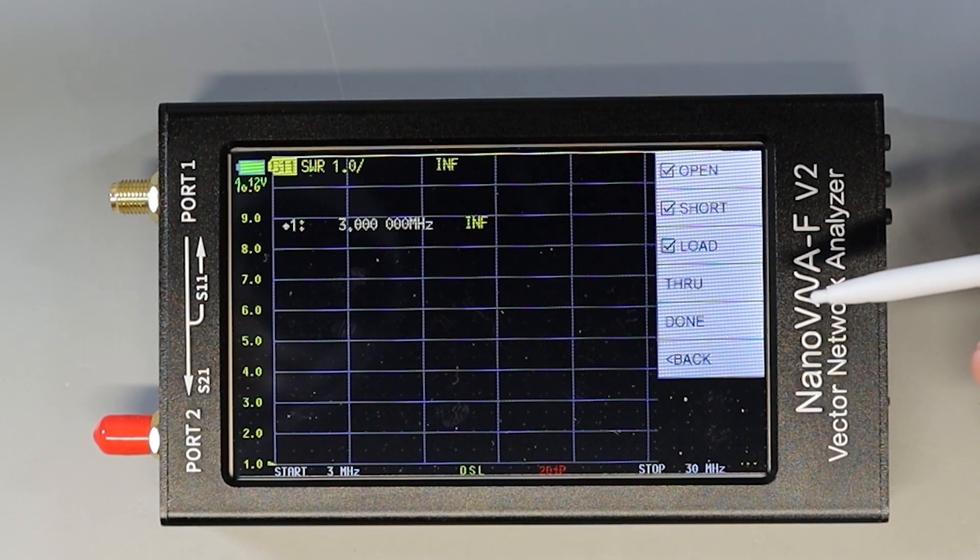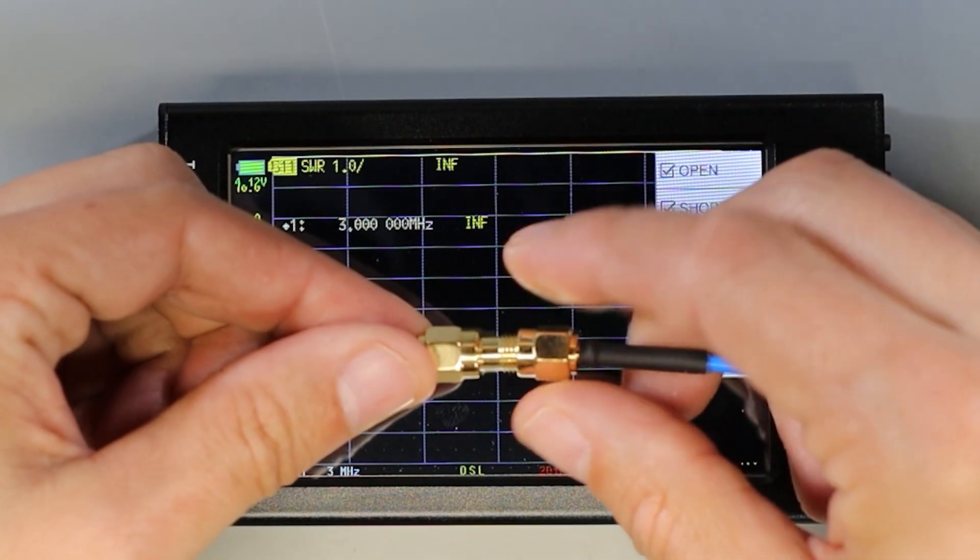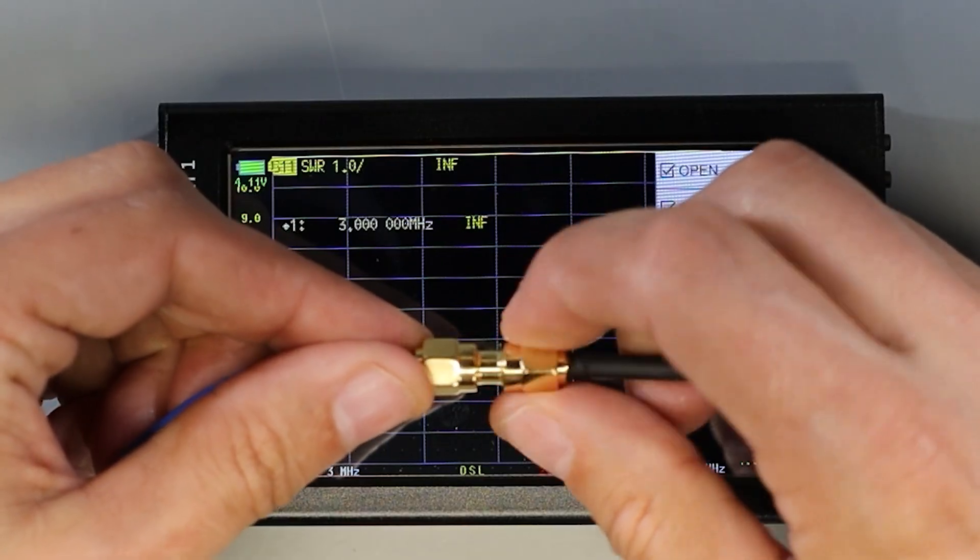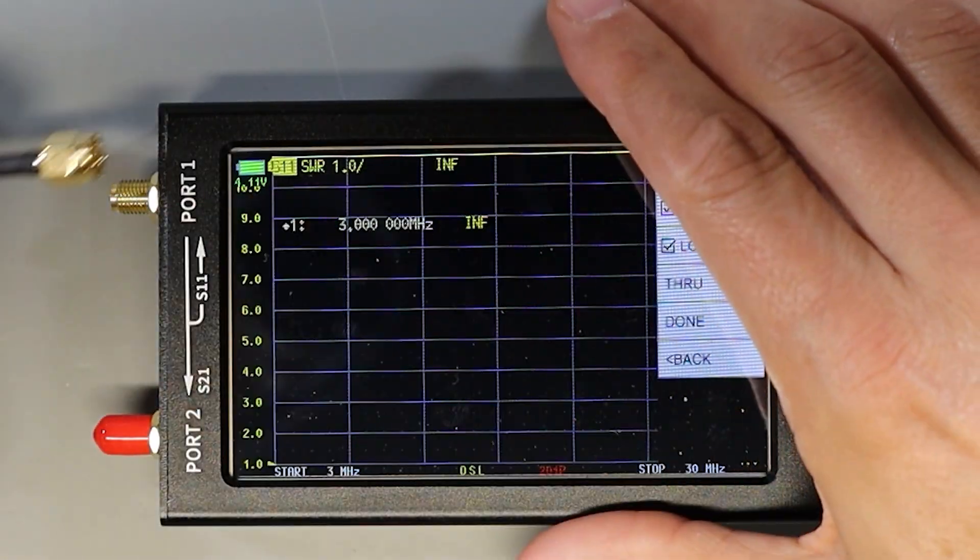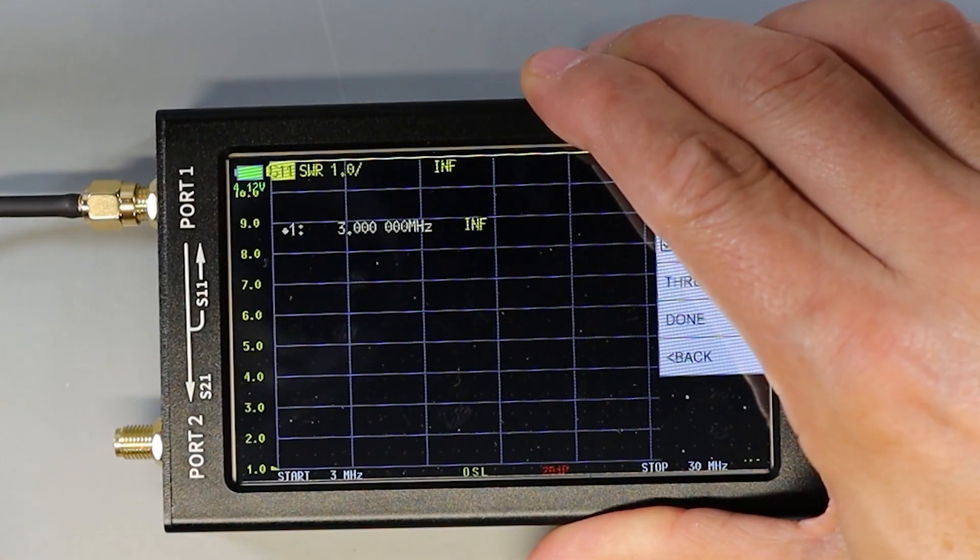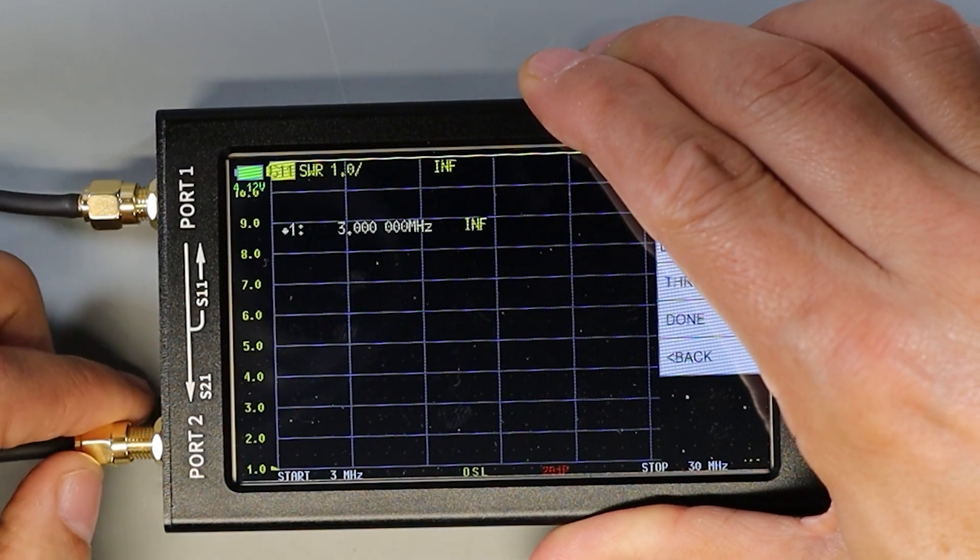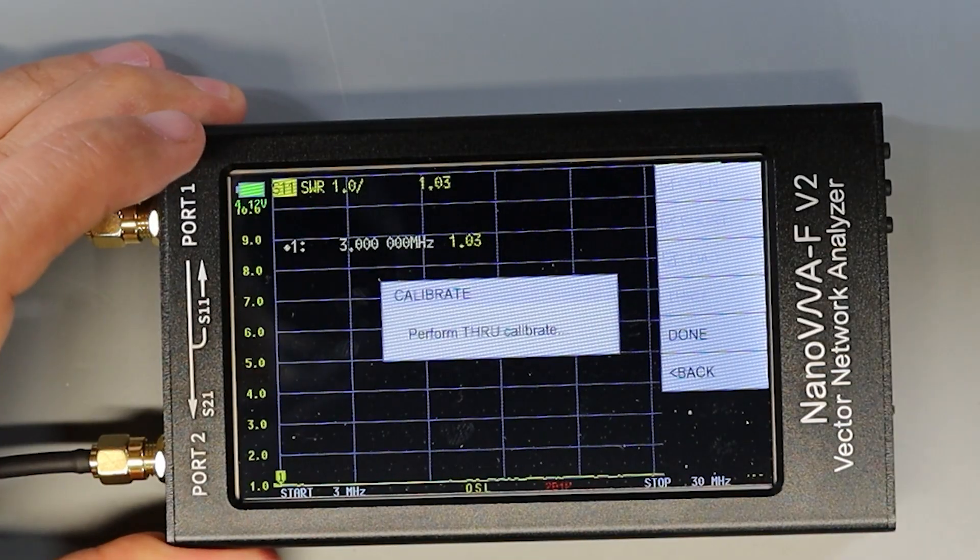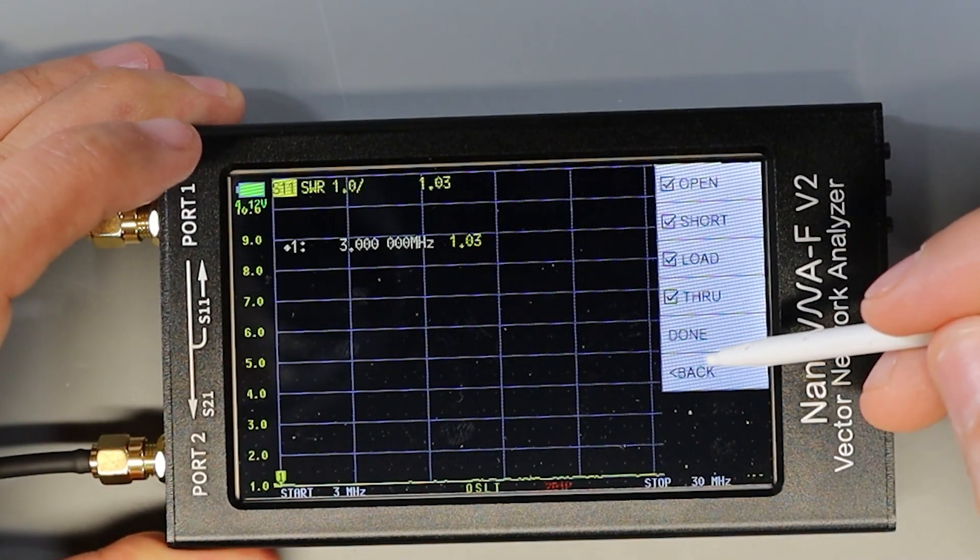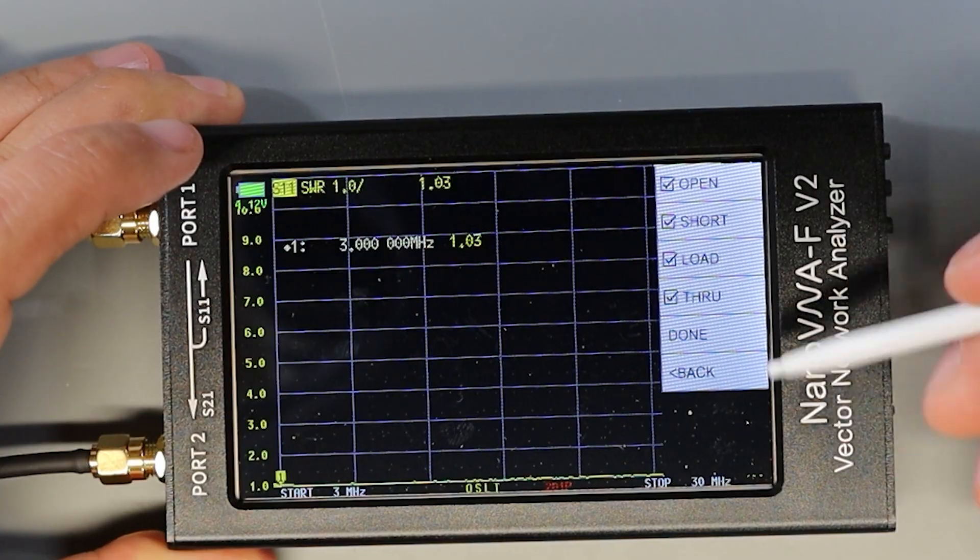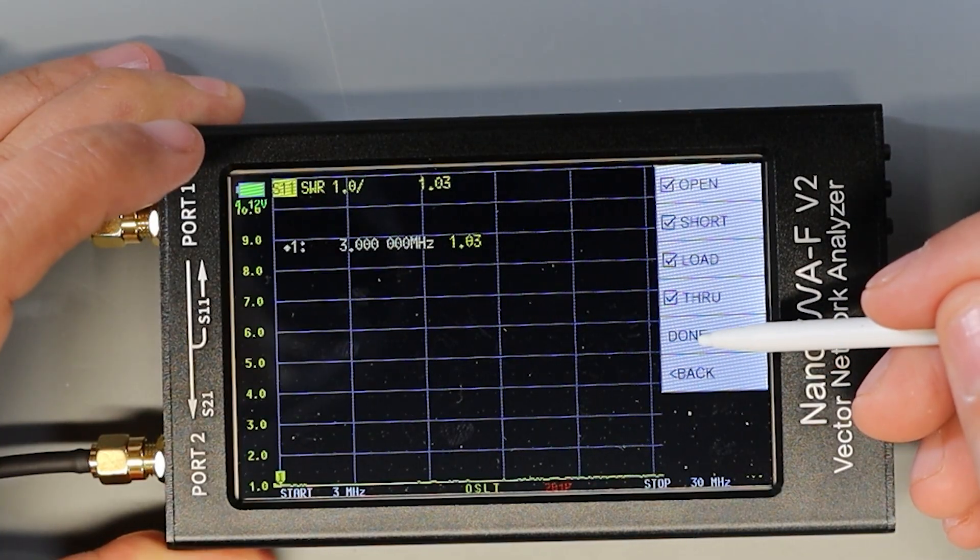For most ham radio applications like measuring SWR of an antenna we don't really need to do the through calibration but I'll do it here just for the sake of completeness. So I'm going to get the two patch cables connected together with the female coupler and then I'm going to connect one end to port 1 and the other end to port 2 and then we'll just click the through button and calibration is done. We get the check mark so now all of the items are calibrated and we can click done.